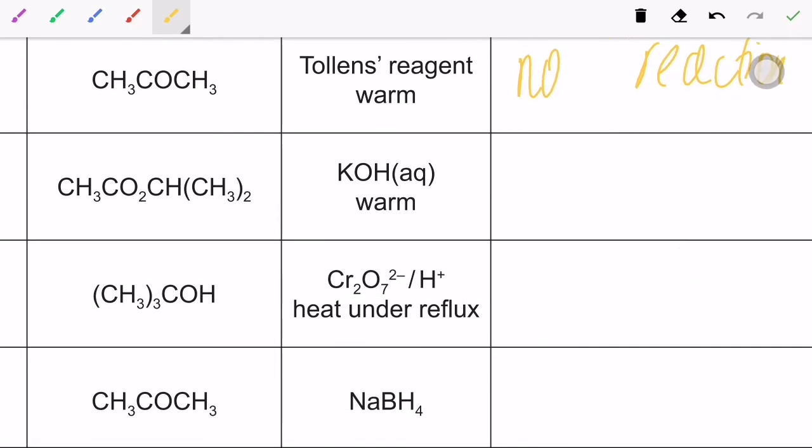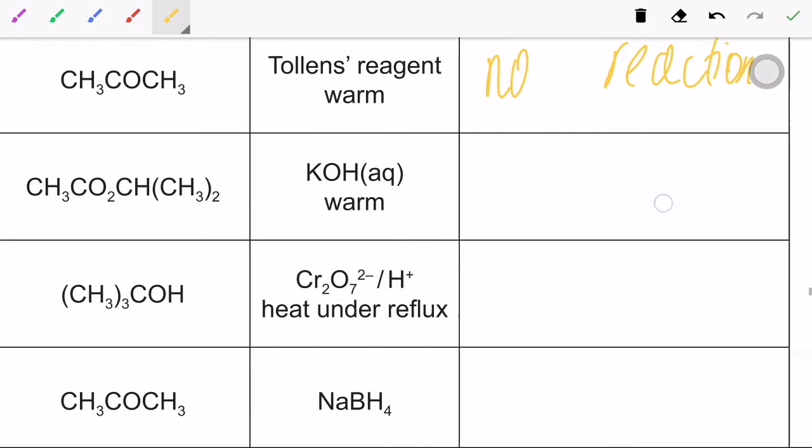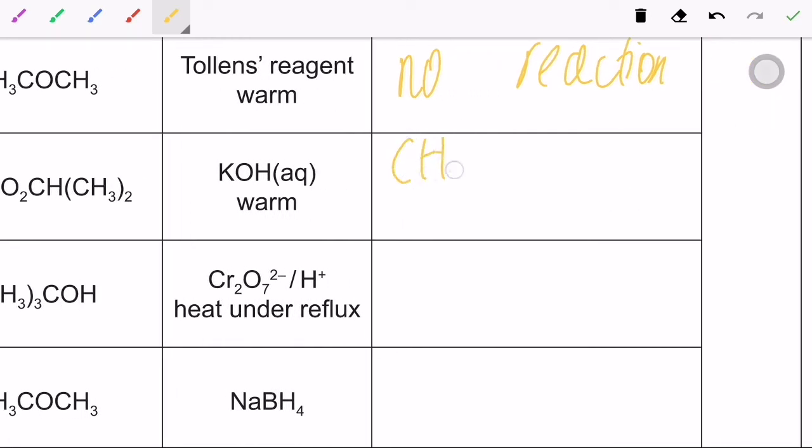So now when you have KOH, the K goes in and something else comes out. So I have CH3 CO, wait I have to write a bit bigger if I want to adjust it all in, CH3 CO2 K.